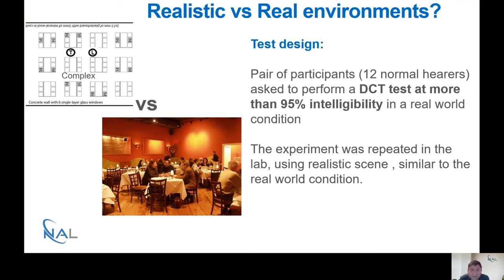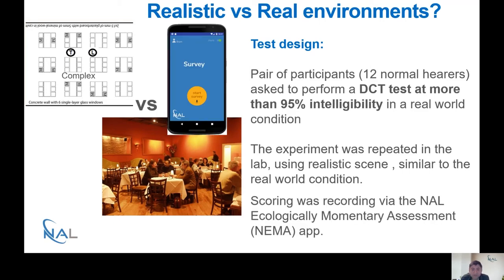The group at NAL recruited participants and asked them to perform the DCT test in the real world communication condition, at around 95% intelligibility, as this was a more natural communication condition for that environment. Then, they reproduced that test in the complex background noise back at the labs. However, real world conditions are extremely dynamic. So how can the two be compared? The group at NAL developed what we call the NAL Ecologic Momentary Assessment Tool, or NEMA app. What NEMA enables us to do, is to score the performance of the listener, at the same time record the background noises. We can use that information to match the complexity of the background noise in the real world with the complex laboratory experiment setup back at NAL.